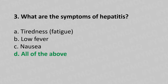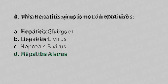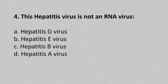Now let's move to question number 4. This hepatitis virus is not an RNA virus. Option A, hepatitis G virus. Option B, hepatitis E virus. Option C, hepatitis B virus. Option D, hepatitis A virus. And the answer is... Option C, hepatitis B virus.